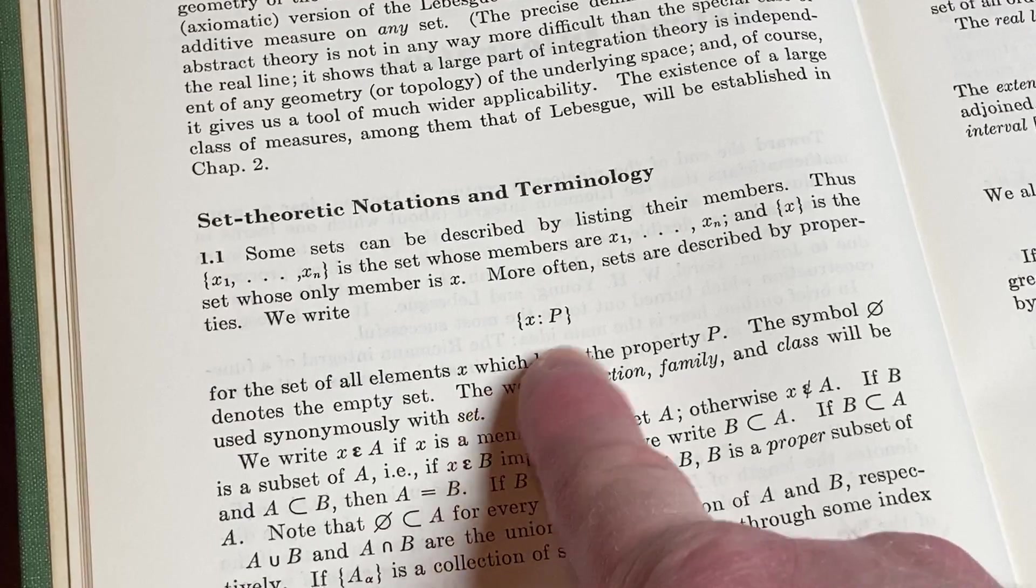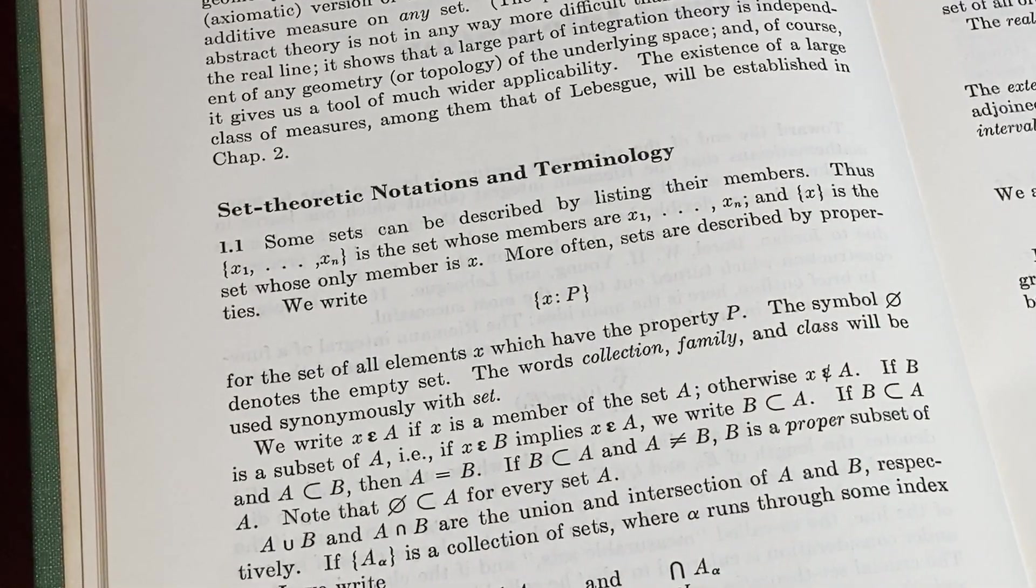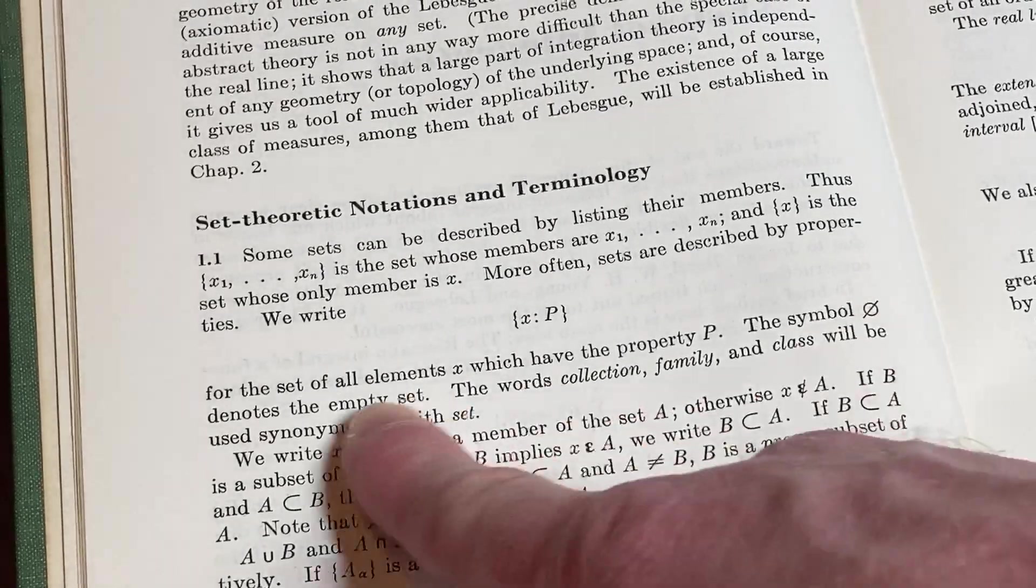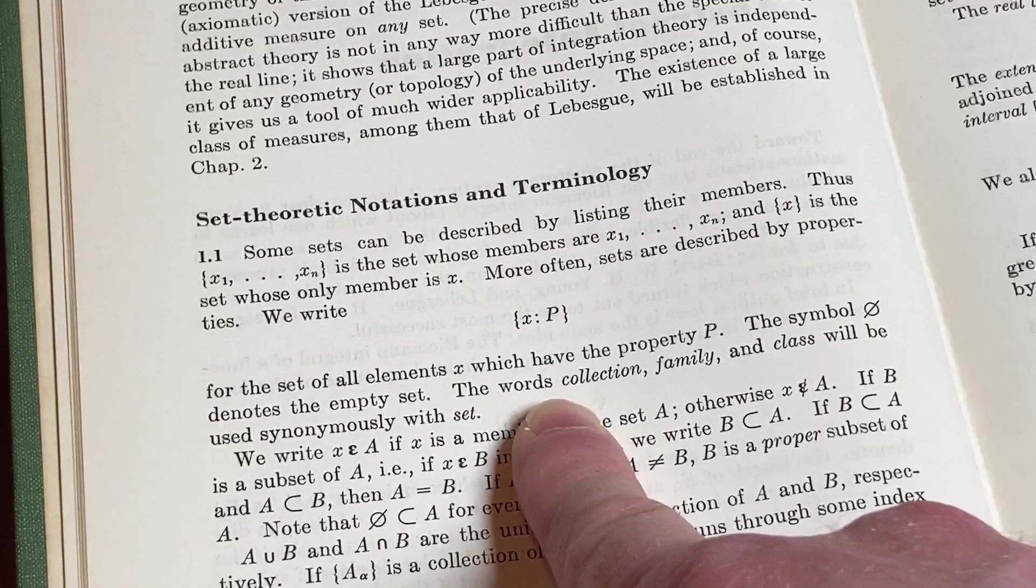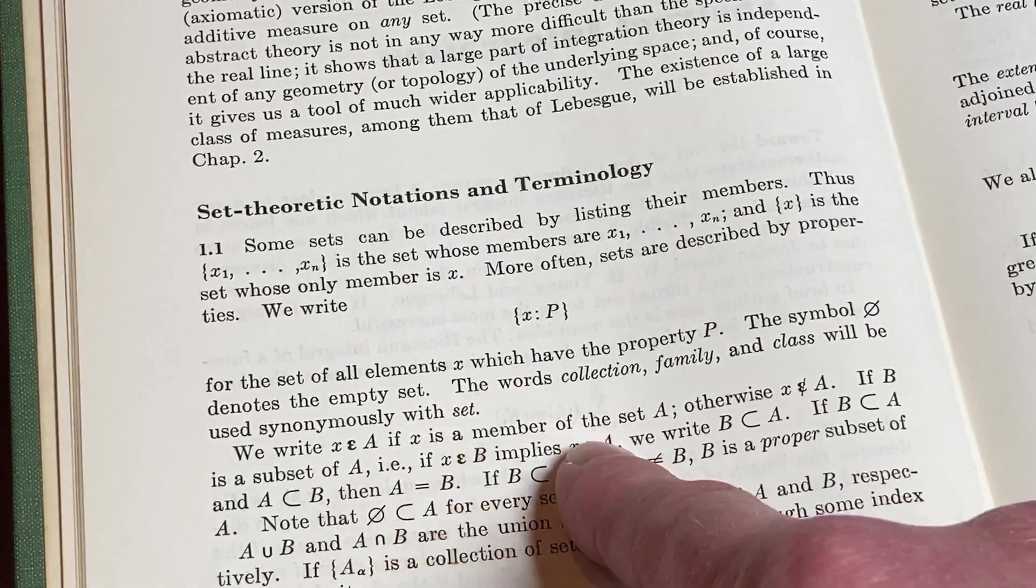Here we have: this is the set whose only member is x—this singleton set. More often sets are described by properties. We write the set of all x that have property P. And this symbol here is the empty set.